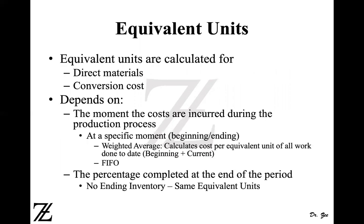The equivalent units are calculated for direct material and also for conversion cost. Conversion cost is your direct labor and factory overhead or manufacturing overhead — it's the cost you incur to convert your direct material into finished products. Some companies also use direct material, direct labor, and manufacturing overhead independently and calculate equivalent units for each of them.